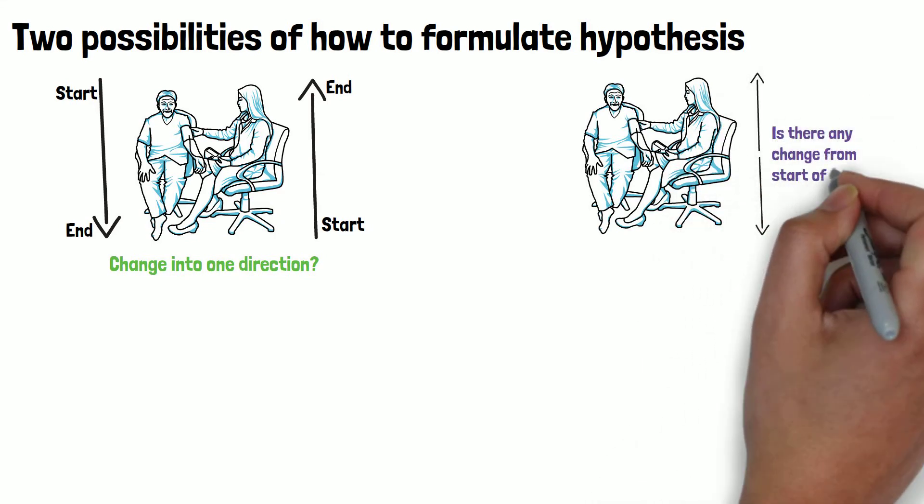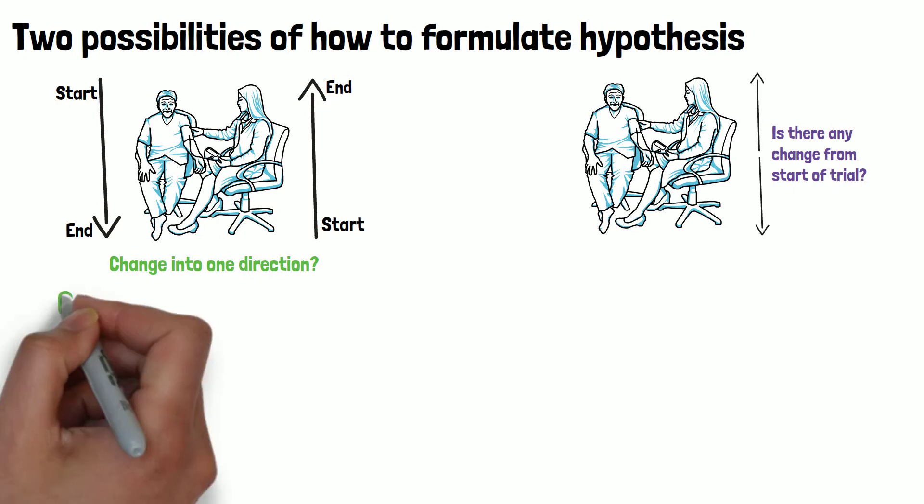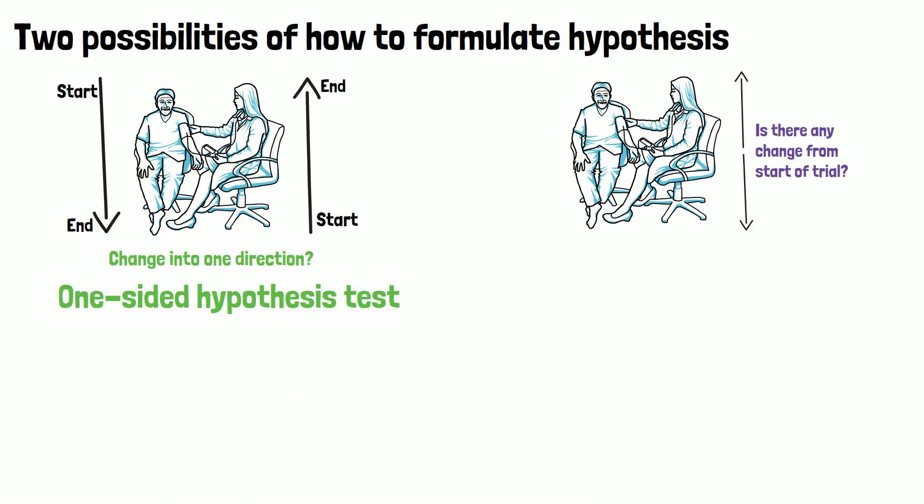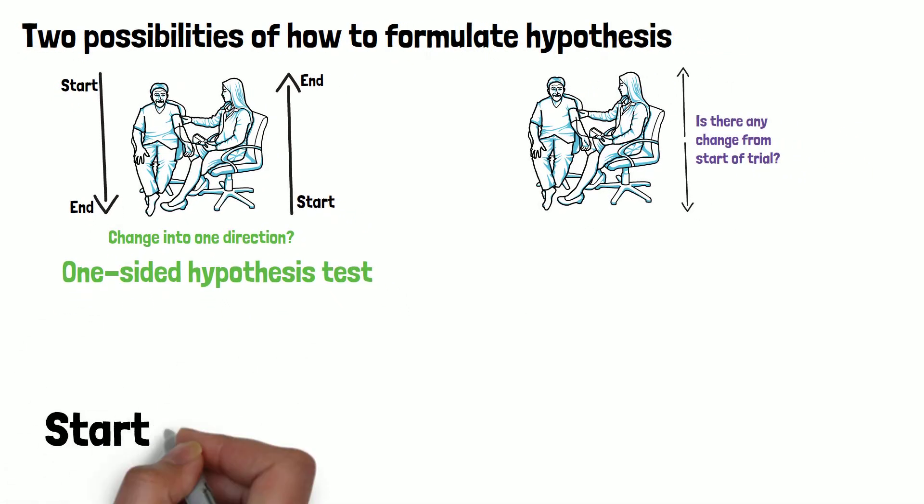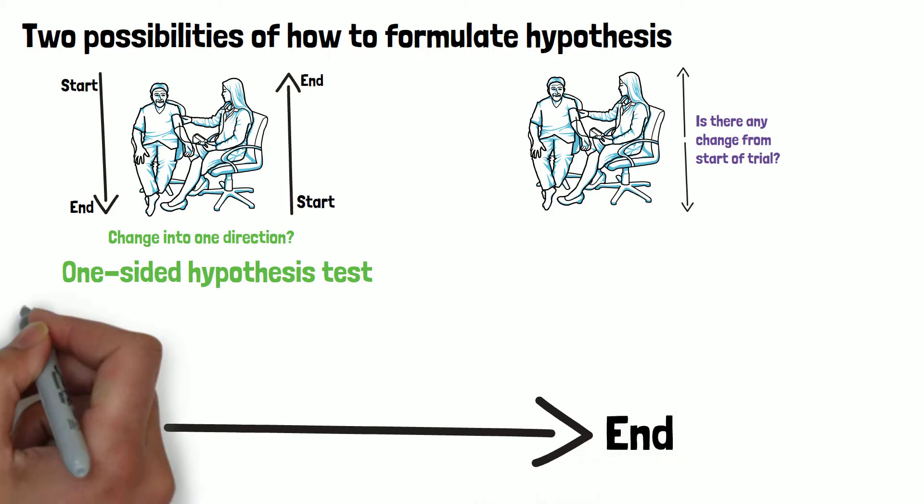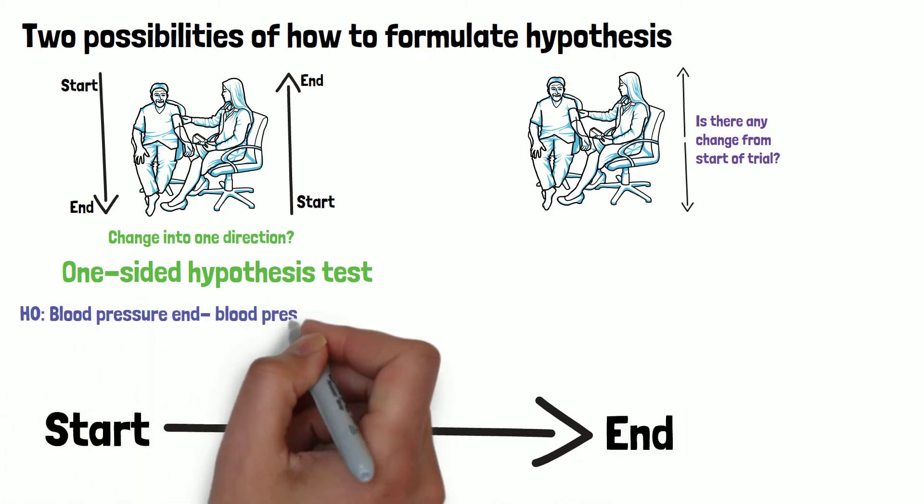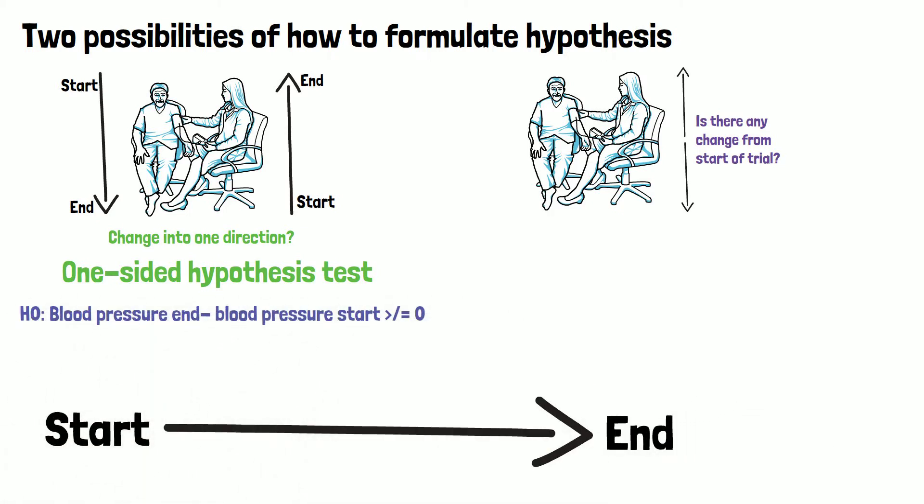The first approach is called a one-sided hypothesis test and has the following notation. The null hypothesis states that the difference in blood pressure between the start of the trial and after three months is the same. So for example a blood pressure of 80 at the beginning and at the end of the trial with the resulting difference of zero.